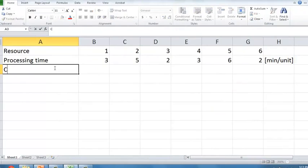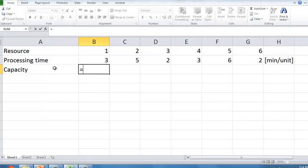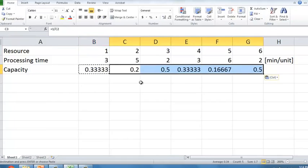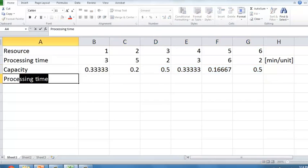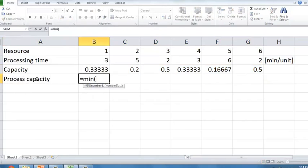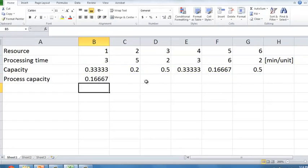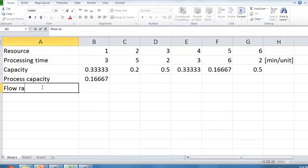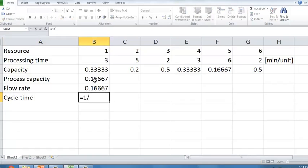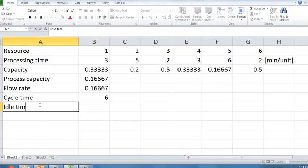So, the first thing that we're going to do is we compute the capacity of each of the resources as one divided by the corresponding processing times. This is now expressed in units per minute. Next, we're going to compute the process capacity as the minimum of the individual capacity levels, which determines that indeed station 5 is as we expected the bottleneck. We can then compute the flow rate as the minimum between demand and capacity. We assumed here that there was sufficient demand, and so the flow rate is given by the process capacity. We can compute then the cycle time as 1 divided by the flow rate, which is telling us that we are making a unit every 6 minutes. This allows me then to compute the idle time at each of the resources.